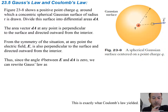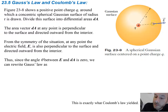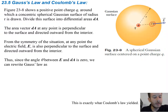The figure here shows a positive charge q around which a concentric spherical Gaussian surface of radius r is drawn, divided into differential elements dA. We have a sphere that we're just going to divide into these little differential elements. The area vector dA at any point is going to be perpendicular to the surface because it's always going to be facing outwards.